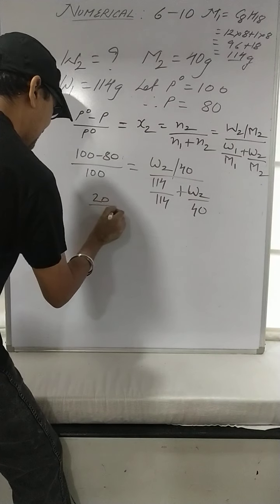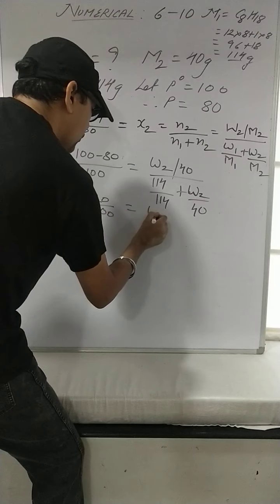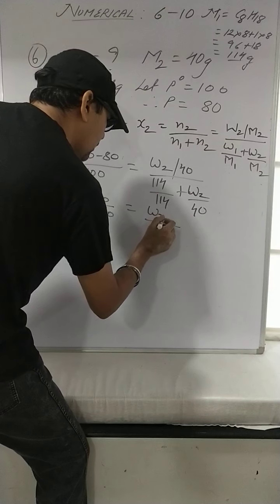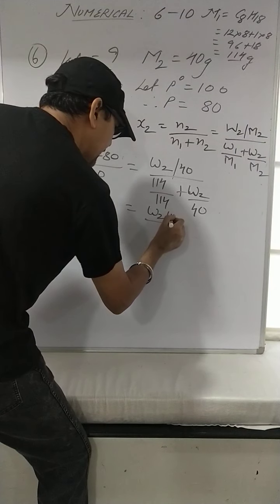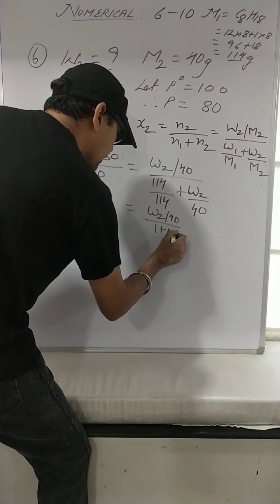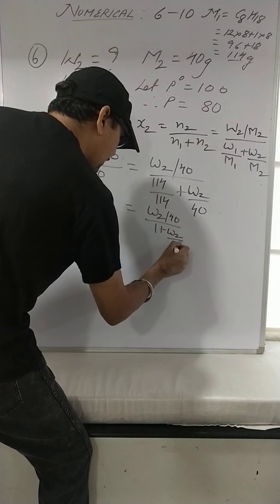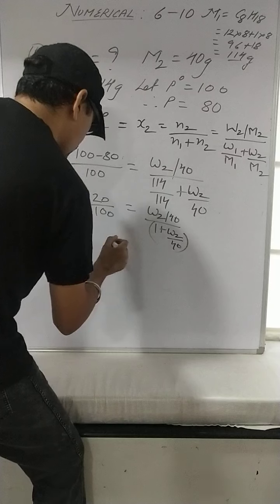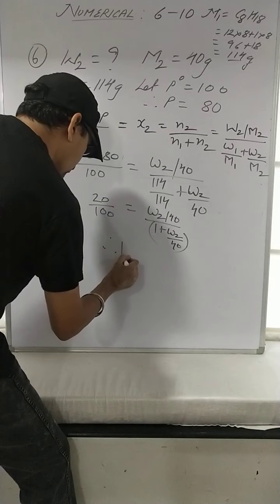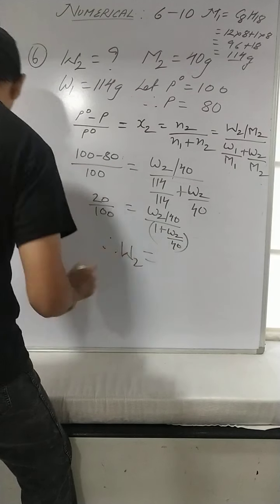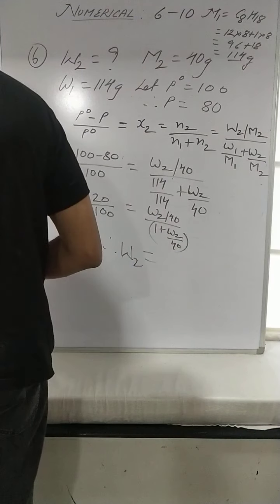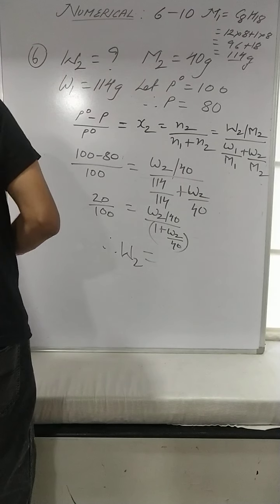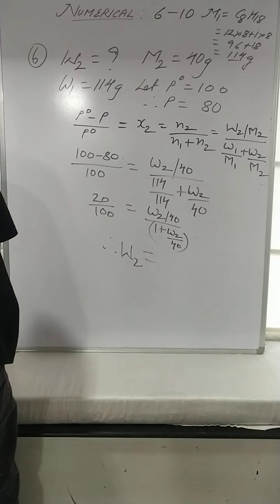So 20/100 = W2/40 divided by (104/114 + W2/40). Here W1/M1 becomes 104/114 ≈ 1, and we bring 40 to the denominator. Solve for W2. Take a screenshot, pause and find out W2, that will be your answer.